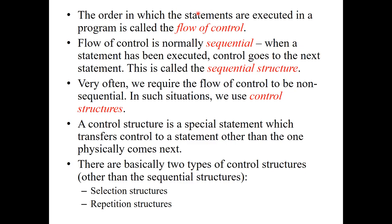The order in which statements are executed in a program is called the flow of control. As you may have done four or five basic programs already, you learned that the computer proceeds line by line — the flow of control is usually sequential. When one statement is executed, control automatically goes to the next statement. But sometimes we need the flow of control to be non-sequential — to skip some statements or do more things depending on a condition. In that kind of situation, we use control structures.